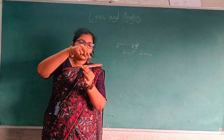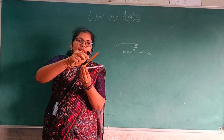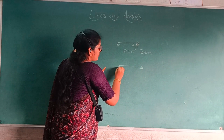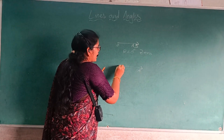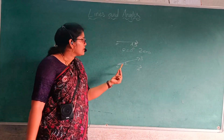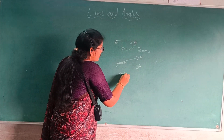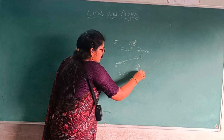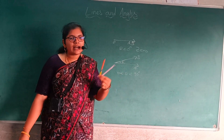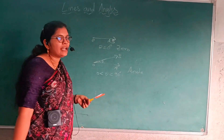Now see, the B ray — the upper ray — is moving a little upwards while OA remains constant, and OB moves upward. The angle theta formed here is called an acute angle. This theta is between 0 degrees and 90 degrees, meaning theta is more than 0 degrees and less than 90 degrees. This is called an acute angle.